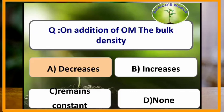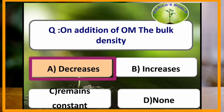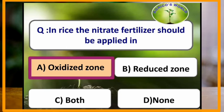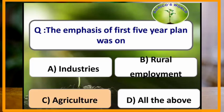On addition of organic matter the bulk density decreases. In rice, the nitrate fertilizer should be applied in the oxidized zone of the soil. The emphasis of the first five-year plan was on agriculture.